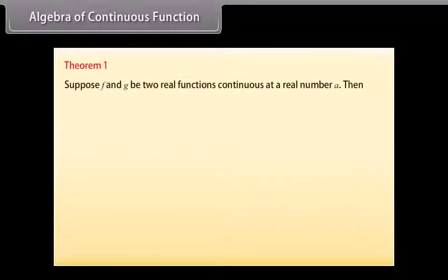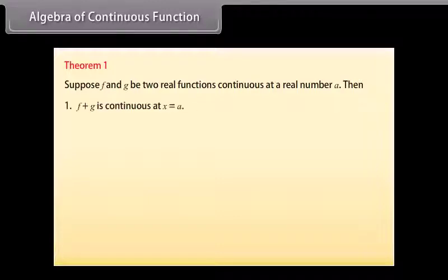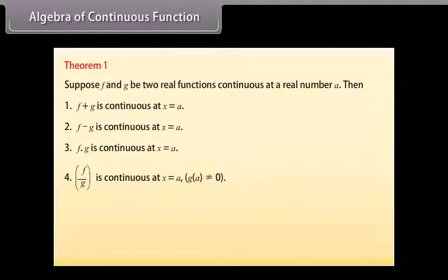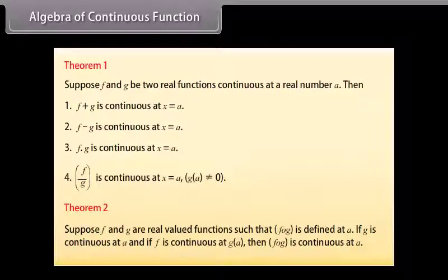Algebra of Continuous Functions. Theorem 1: Suppose f and g are two real functions continuous at a real number a. Then: 1. f + g is continuous at x = a; 2. f − g is continuous at x = a; 3. f · g is continuous at x = a; 4. f/g is continuous at x = a, provided g(a) ≠ 0. Theorem 2: Suppose f and g are real-valued functions such that f∘g is defined at a. If g is continuous at a and f is continuous at g(a), then f∘g is continuous at a.